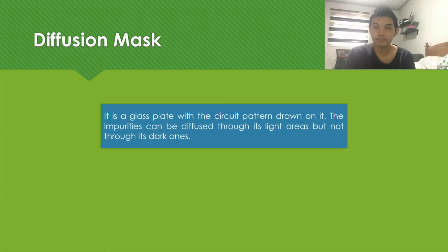Diffusion mask. A diffusion mask is generally made of glass. It is used to etch the circuit where diffusion would occur. Only the light areas of the diffusion mask will be used for diffusion. On the other hand, the dark sections are not for diffusion.